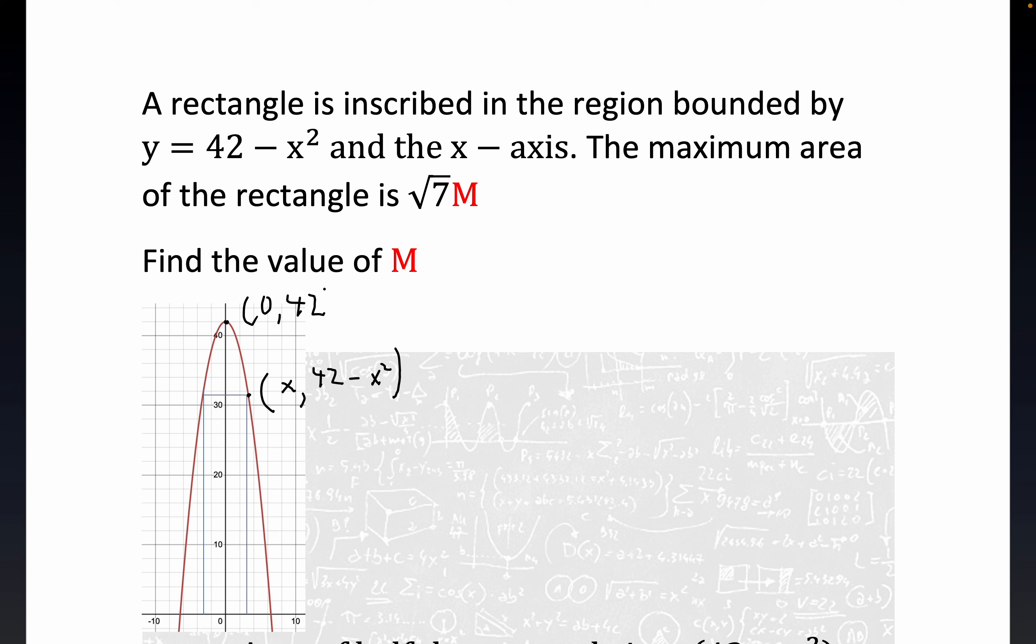OK, now this is kind of an odd initial condition. It's an SMO practice problem, I think. And they give you the maximum area as being in this form, the square root of 7 times m, where m is some real number, not necessarily an integer. So m is a real number, and we're supposed to find this value of m. So let's get busy with that.